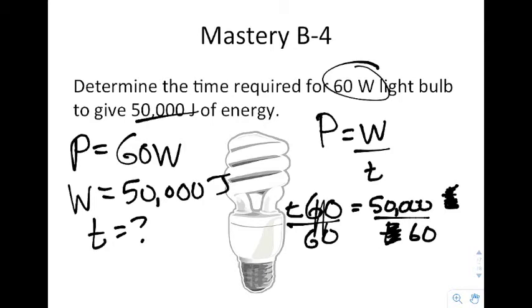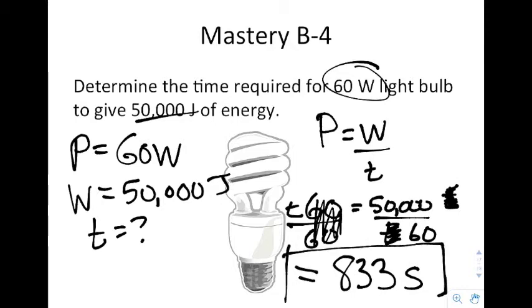You would go to your calculator. T equals 50,000 divided by 60. 50,000 divided by 60 ends up being about 833 seconds. 833 seconds is roughly 14 minutes. So in about 14 minutes of leaving a 60 watt light bulb on, you've used over 50,000 joules of energy.